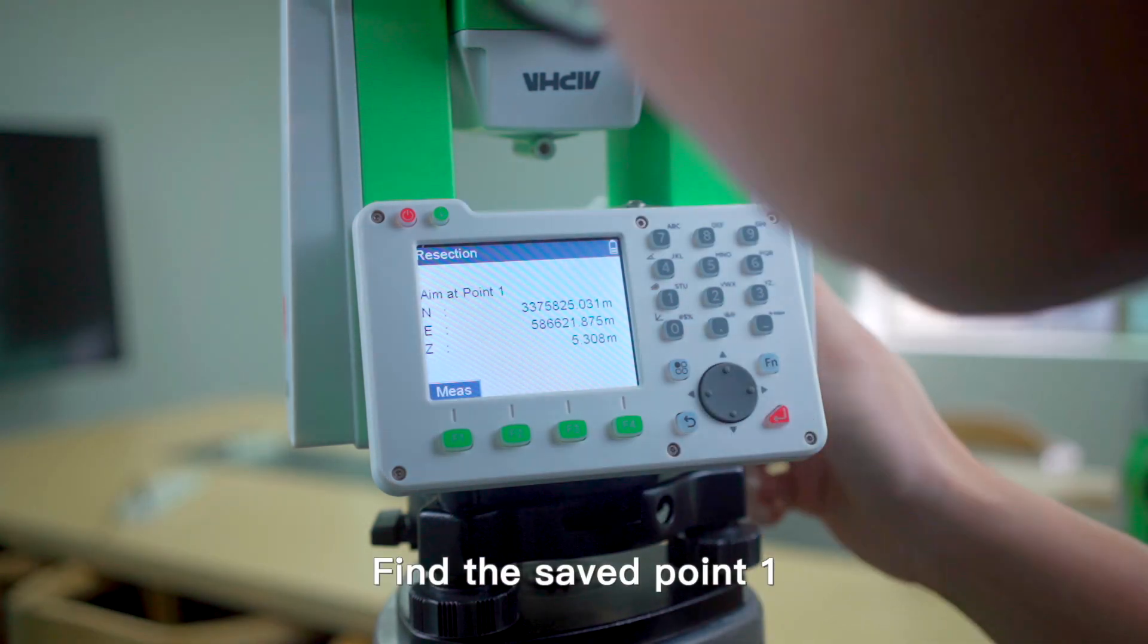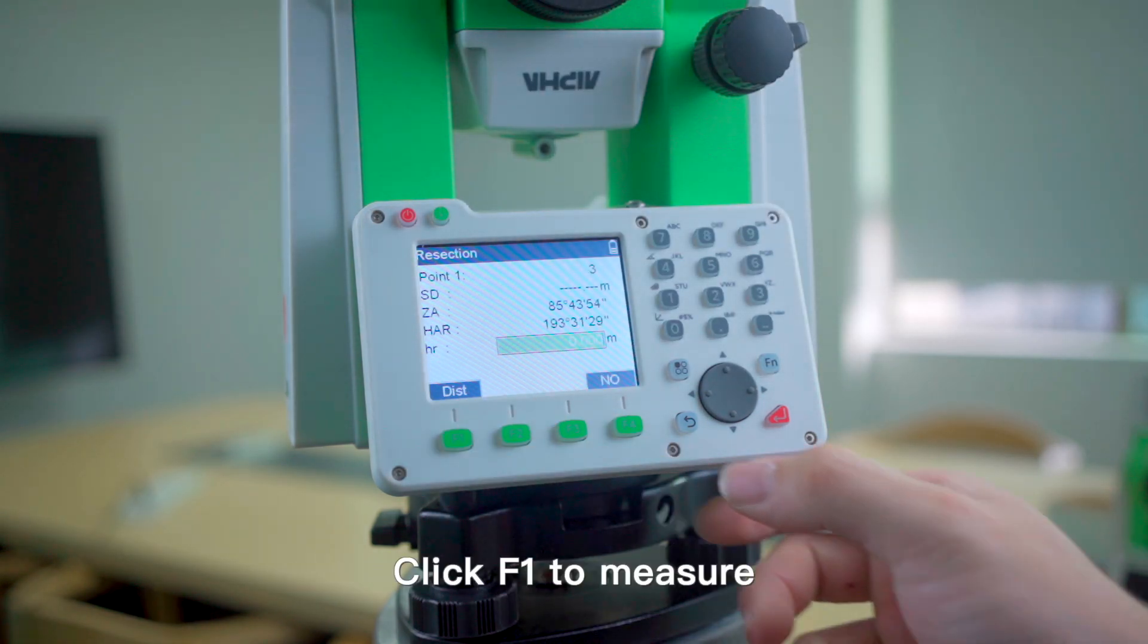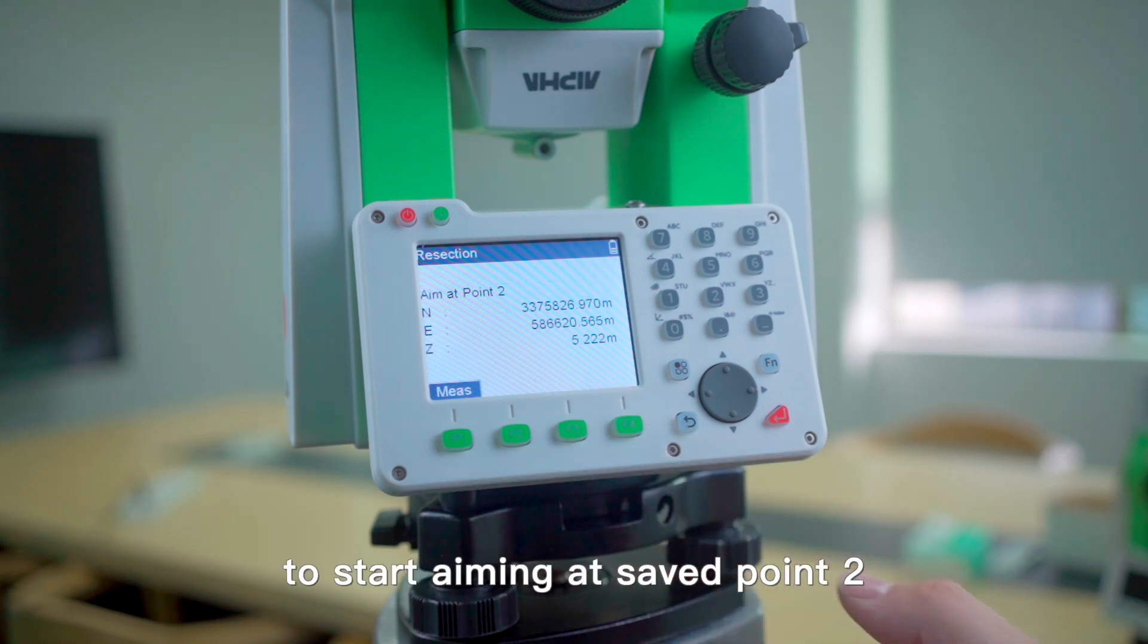Find the saved point 1. Click F1 Meas. Input the height of the prism. Click F1 to measure. Click F3 to start aiming at saved point 2.